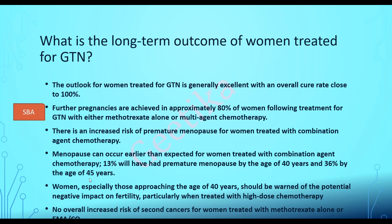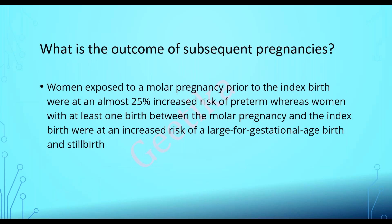Women especially those approaching age 40 should be warned of potential negative impact on fertility, particularly when treated with high-dose chemotherapy. Previously, the EMACO regime with etoposide was said to cause secondary cancers, particularly myeloid leukemias. However, recent studies and case series have shown there is no overall increased risk of secondary cancers for women treated with methotrexate alone or EMACO.